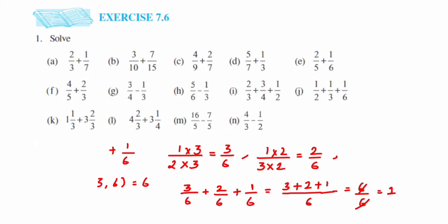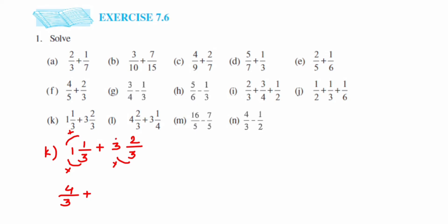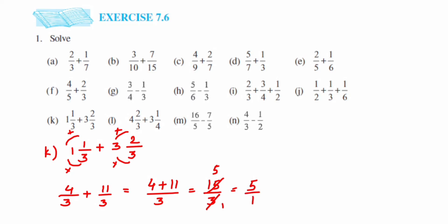Problem K involves mixed fractions: 1⅓ plus 3⅔. Whenever we have a mixed fraction, we first convert it to an improper fraction. For 1⅓: multiply 1 and 3 to get 3, then add the numerator — 3 plus 1 is 4, giving 4 by 3. For 3⅔: 3 times 3 is 9, then 9 plus 2 is 11, giving 11 by 3. Denominators are already the same, so add the numerators: 4 plus 11 is 15 by 3. Cancelling, 3 fives are 15, so the answer is 5.